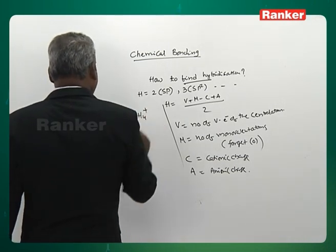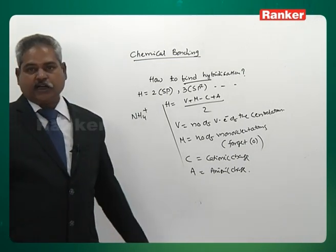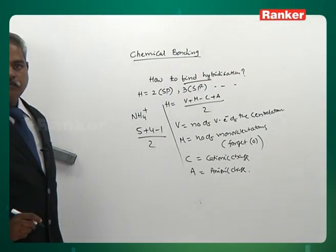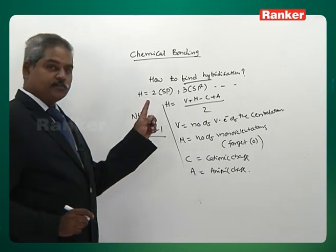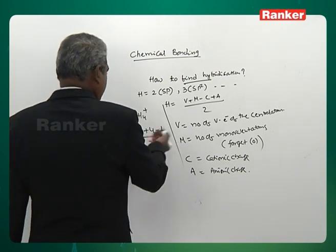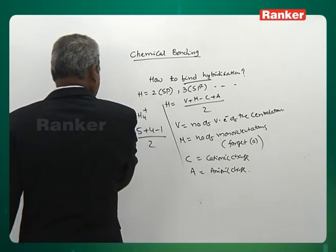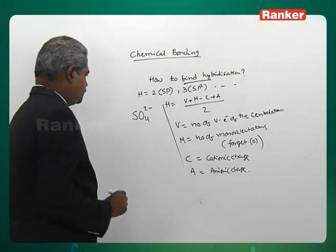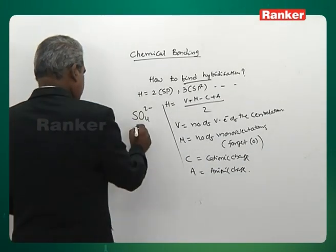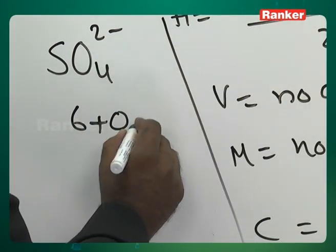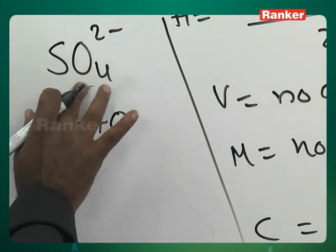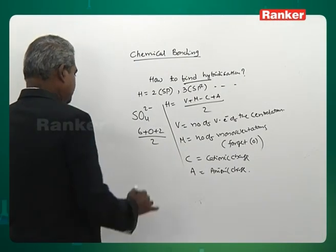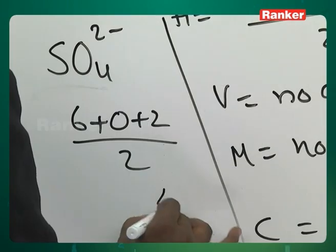NH4⁺: nitrogen, V = 5, M = 4 (four hydrogens), C = 1 (cationic charge). H = (5 + 4 − 1) / 2 = 4. Hybridization is sp3 once again. SO4²⁻: sulfur V = 6, ignore oxygens, A = 2. H = (6 + 0 + 2) / 2 = 4. Hybridization is sp3.